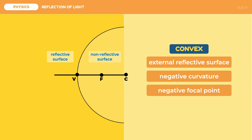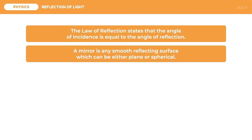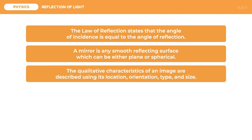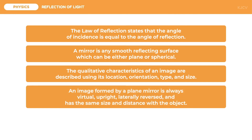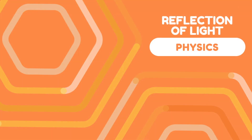To conclude this lesson, let us review the key points. The law of reflection states that the angle of incidence is equal to the angle of reflection. A mirror is any smooth reflecting surface, which can be either plane or spherical. The qualitative characteristics of an image are described using its location, orientation, type, and size. An image formed by a plane mirror is always virtual, upright, laterally reversed, and has the same size and distance as the object. An image formed by a spherical mirror depends on the object's location relative to the mirror's vertex, focus, and center of curvature. And that ends our discussion on the reflection of light.